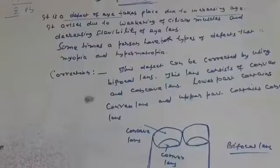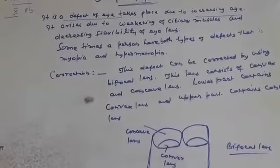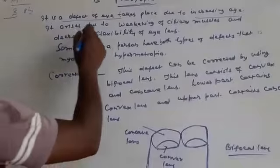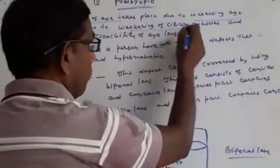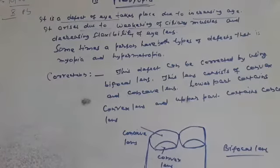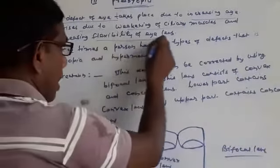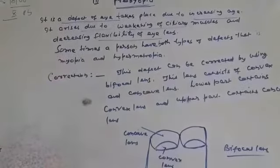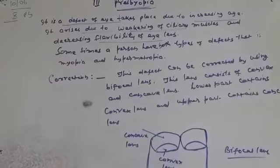What is the reason for this defect? When our age is increased, due to increased age, the ciliary muscles become weak. That is weakening of ciliary muscles. All of you know, eye lens is flexible.